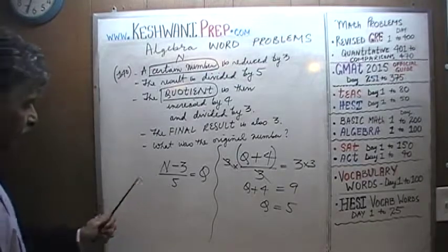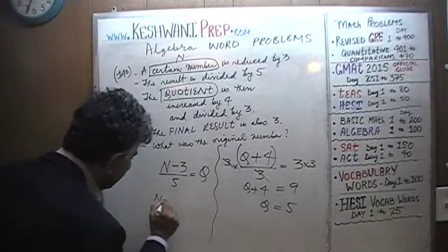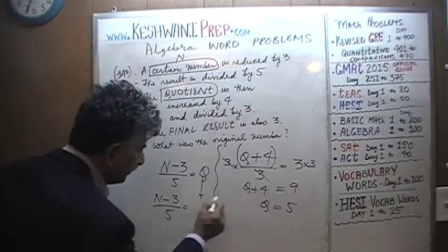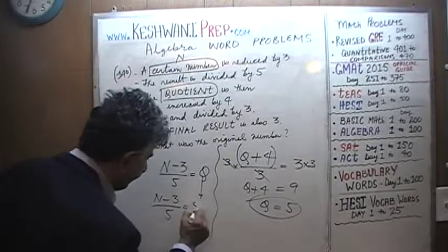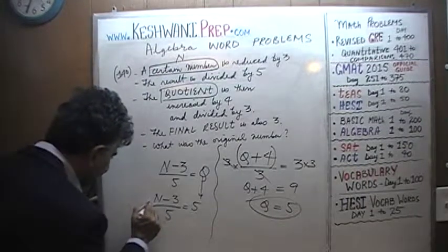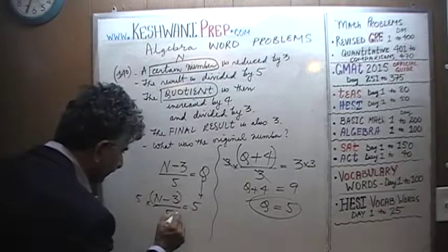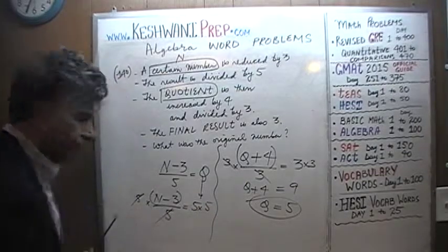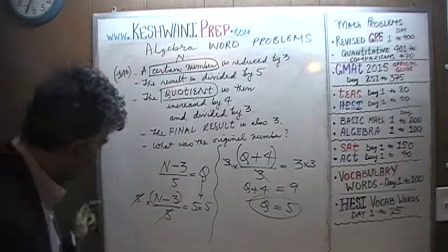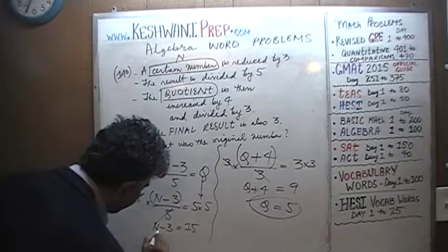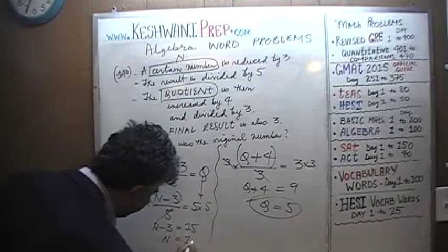Put it in here. It's a very simple equation. So N minus 3 over 5. N minus 3 over 5 has to equal Q, which we just found out is 5. Multiply both sides by 5 so we can get rid of this 5. Multiply this side by 5. N minus 3. Multiply this side by 5. Which means N minus 3 equals 15. If N minus 3 equals 15, N must be 18.